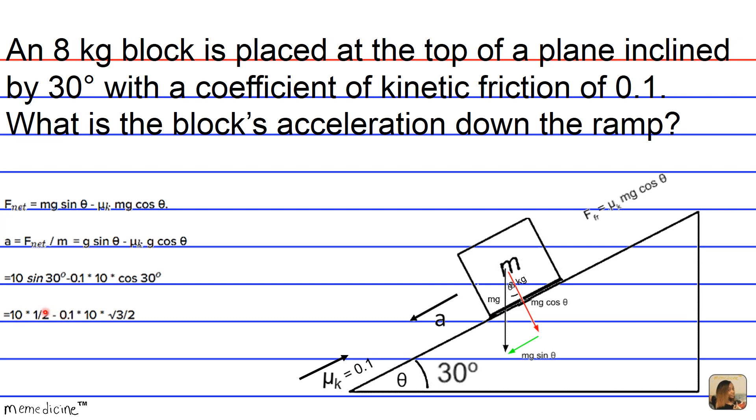So 10 times 1 half, because the sine of 30 is 1 half, and these two just kind of become 1, so we can ignore that, times radical 3 divided by 2. So that's the cosine of 30, or some people prefer to say the square root of 3 divided by 2.